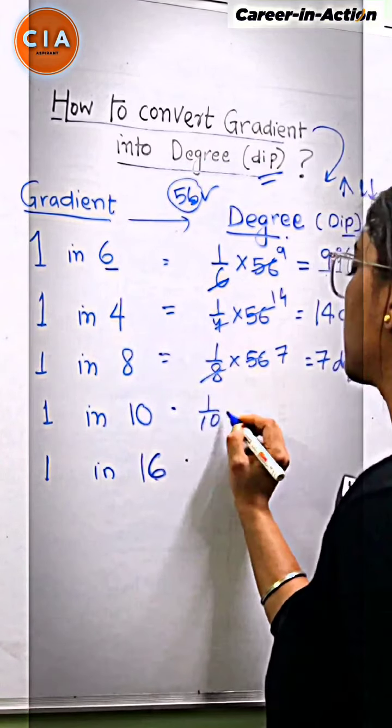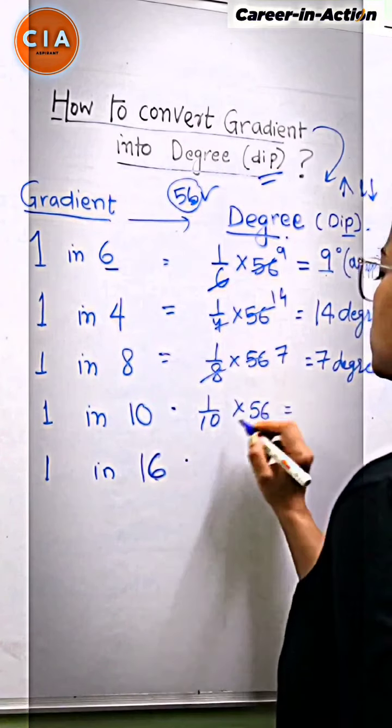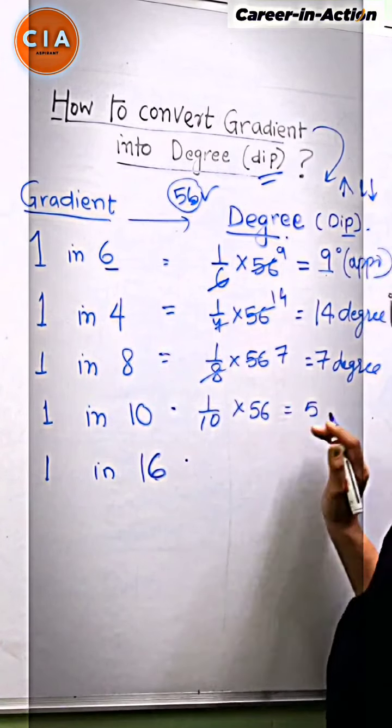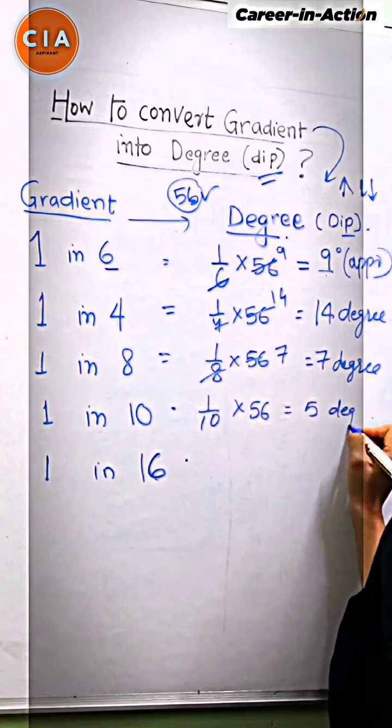We will do 1 in 10. How do you do it? 56 divided by 10. So, we will get 5 to 6 degrees.